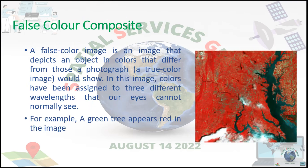False color composite: a false color image is an image that depicts an object in colors that differ from those a photograph, a true color image, would show. In this image, colors have been assigned to three different wavelengths that our eyes cannot normally see. For example, a green tree appears red in the image.